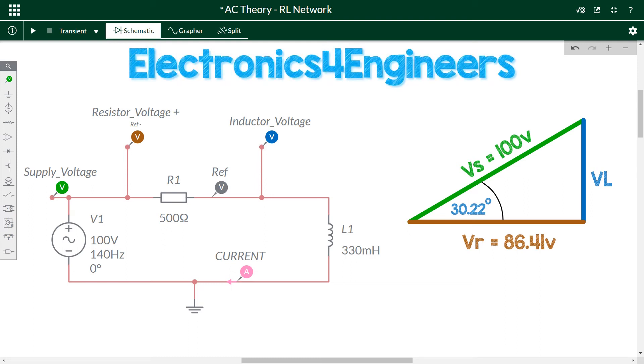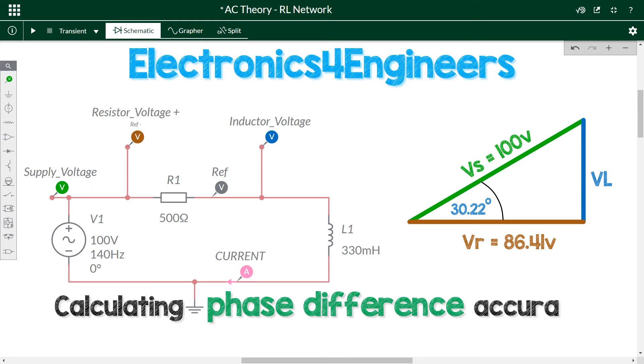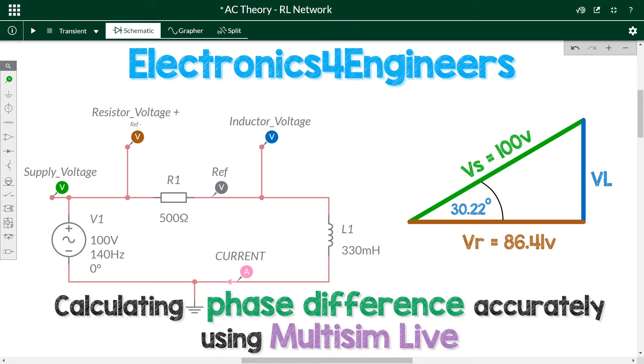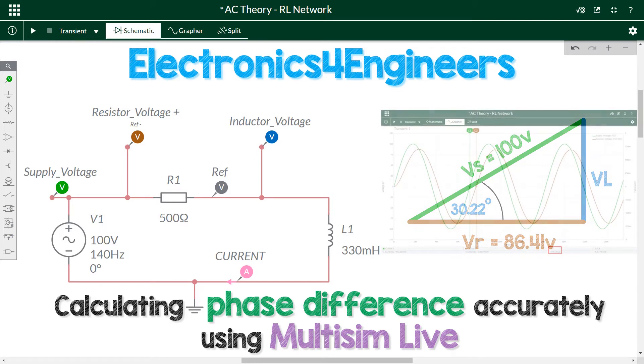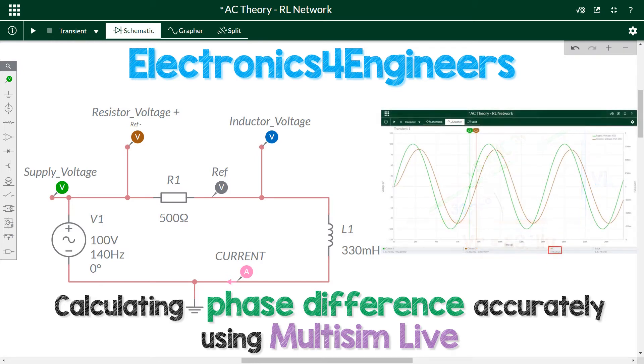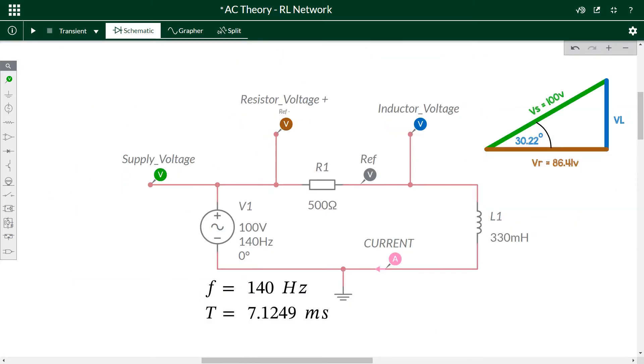Welcome to this Electronics for Engineers video on calculating phase difference accurately using Multisim Live. We have a series RL or resistor inductor circuit with an AC voltage supply which is at 140 Hz. The period is therefore 1 over 140, which is just over 7 milliseconds.